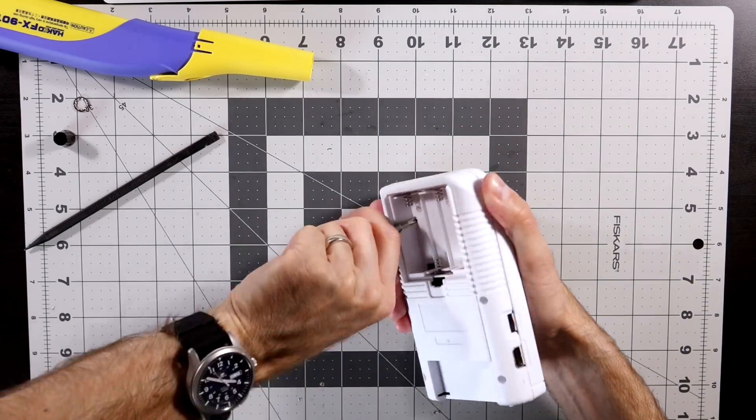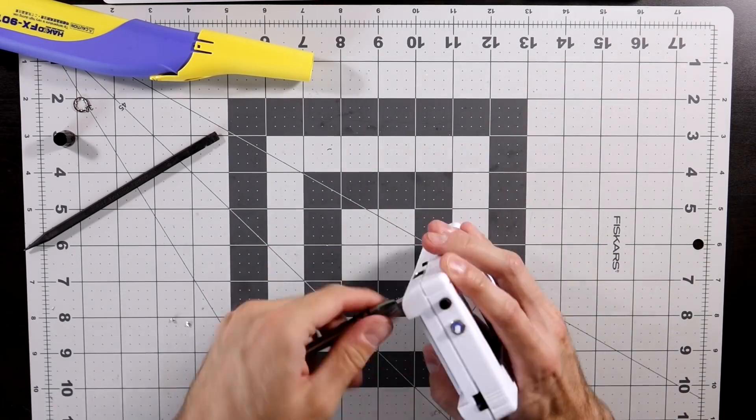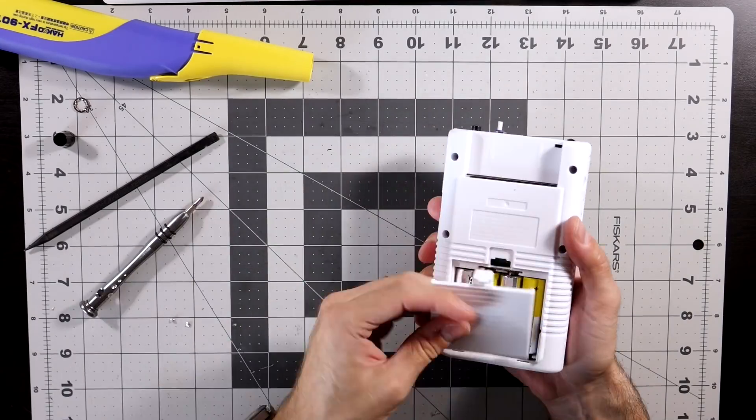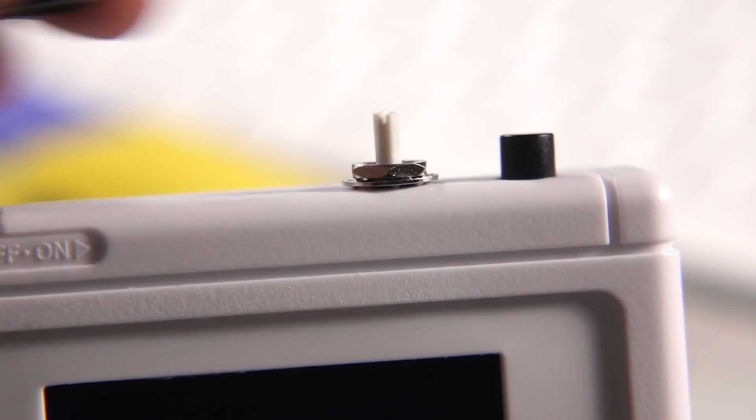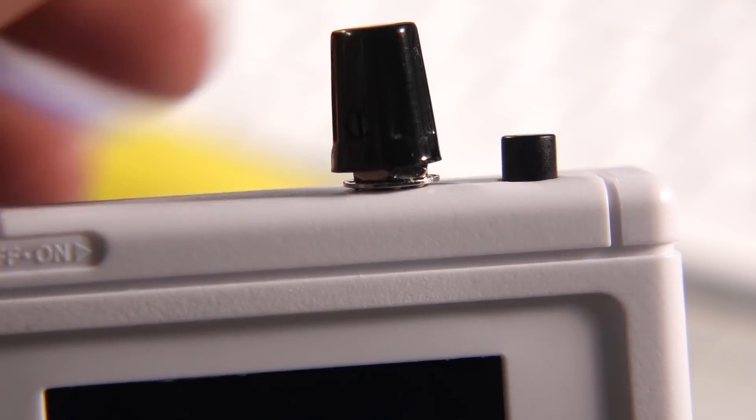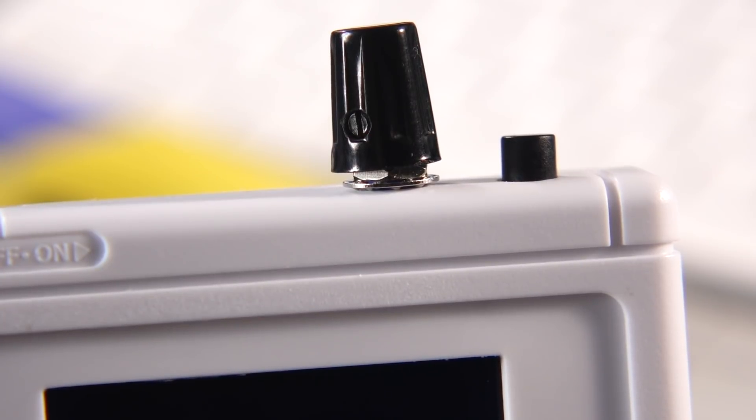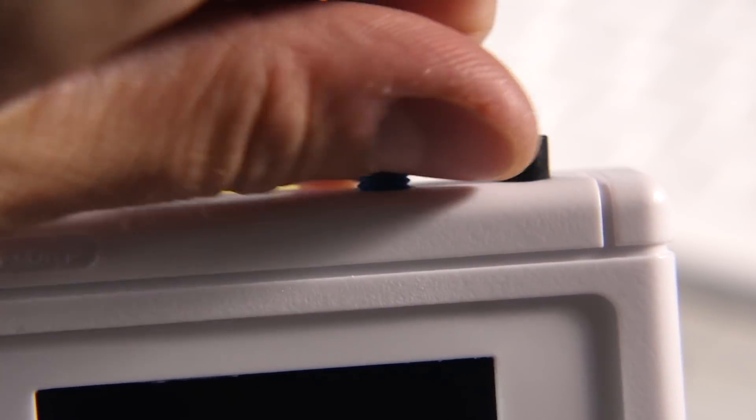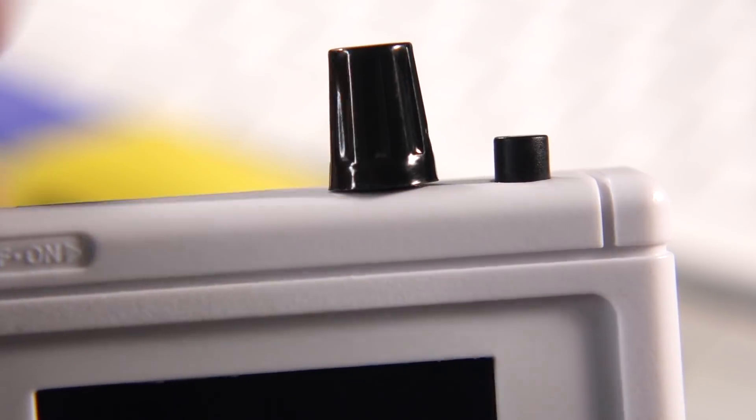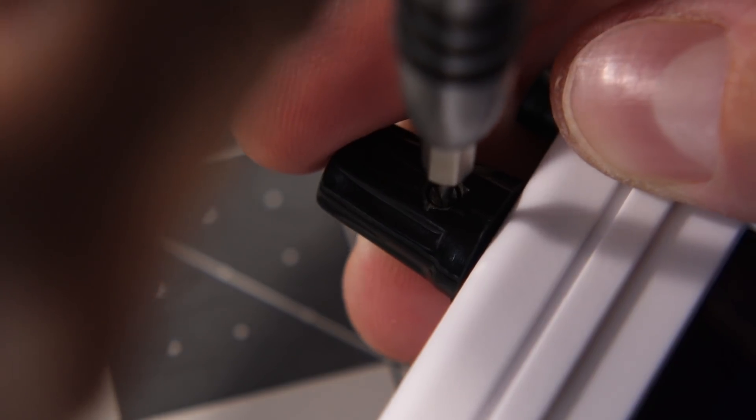These case screws can be a little tough on a new housing because they're cutting their own threads in the standoffs. The potentiometer for the clock module comes with a knob, which sticks out a bit because of the nut. The fit is tight enough that it's not really necessary, so I removed it. The knob itself secures with a simple flat-head set screw.